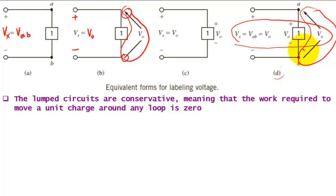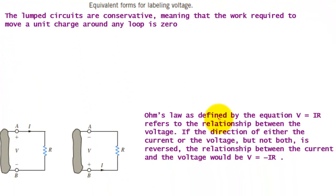Ohm's law as defined by the equation V equals IR refers to the relationship between the voltage and the current. So if the direction of either the current or the voltage, but not both, is reversed, the relationship between the current and the voltage will be V equals IR.